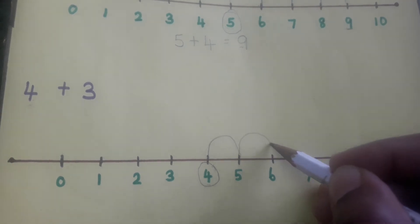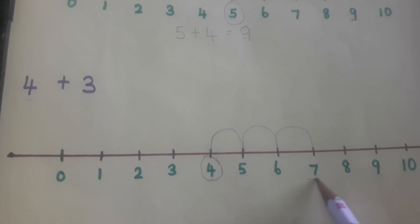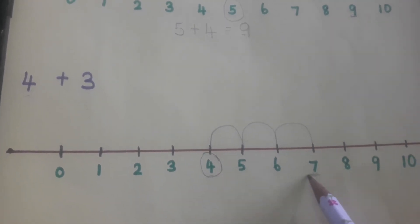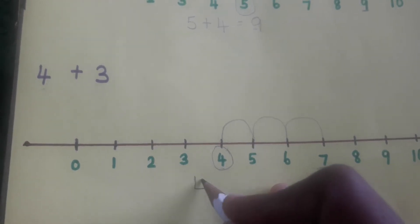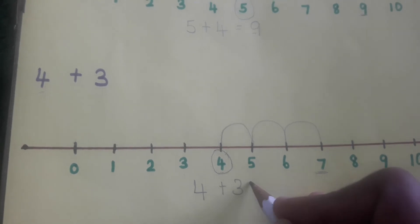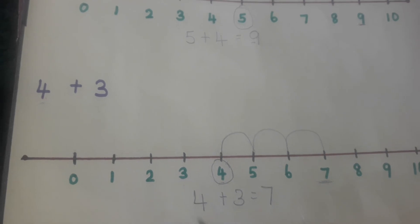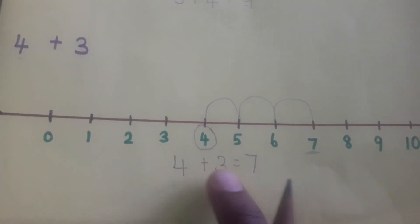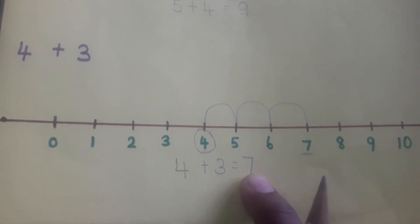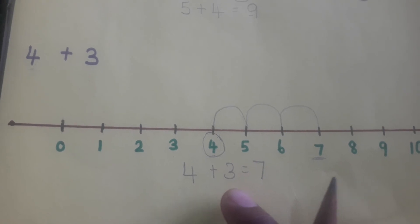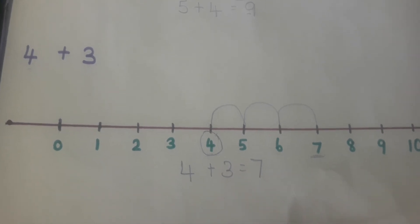Let us jump 3 times from 4: 1, 2, 3. Very good! Now we have reached number 7. So when we add 4 plus 3, we get 7. The sum is 7. Hope you understand. Thank you, children — we will meet in the next class!